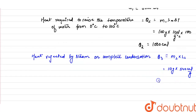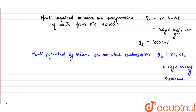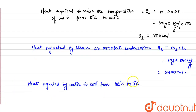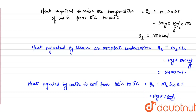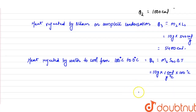Now find the heat rejected by the water which condenses from steam as it cools from 100°C to 0°C. Q4 = mass of condensed steam × specific heat of water × ΔT = 10 g × 1 cal/g°C × 100°C = 1000 calories.